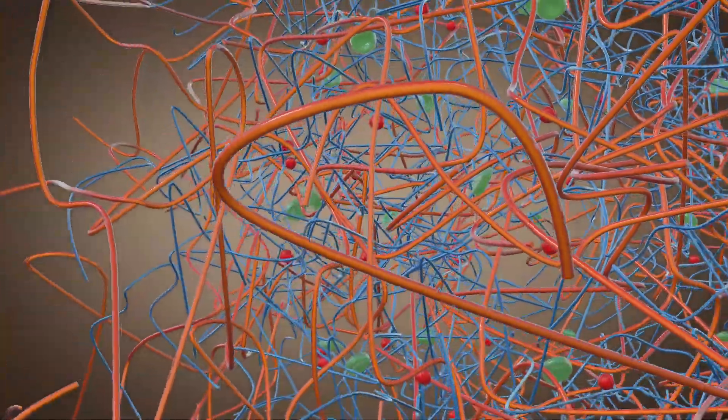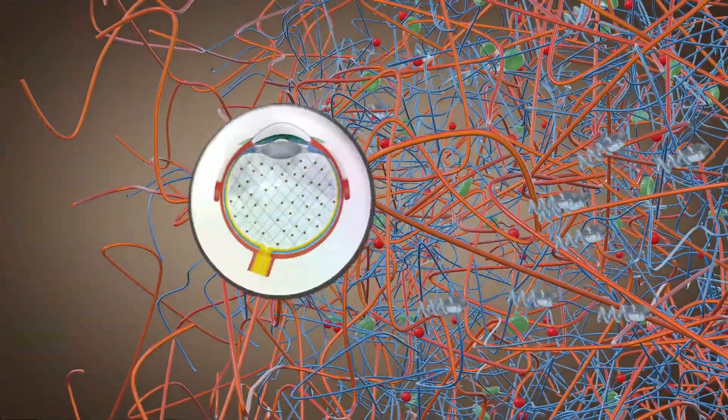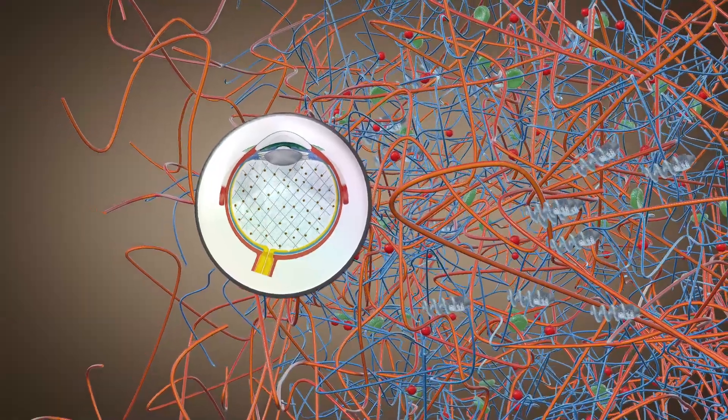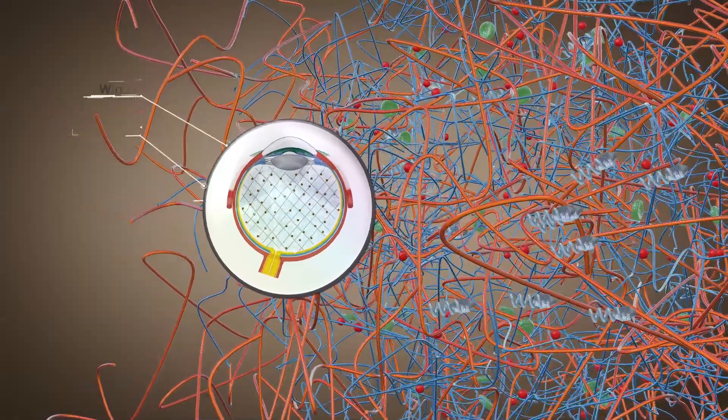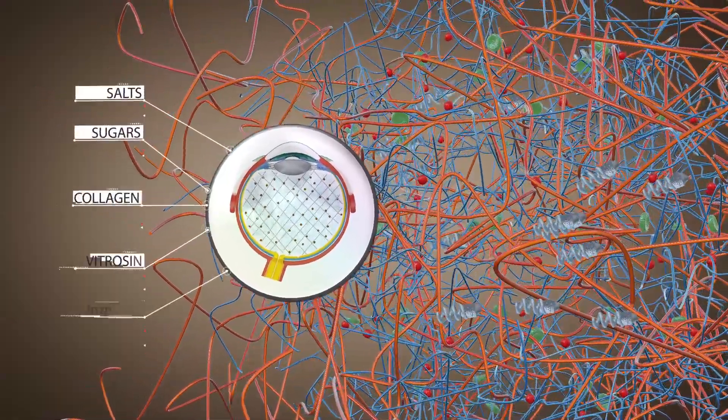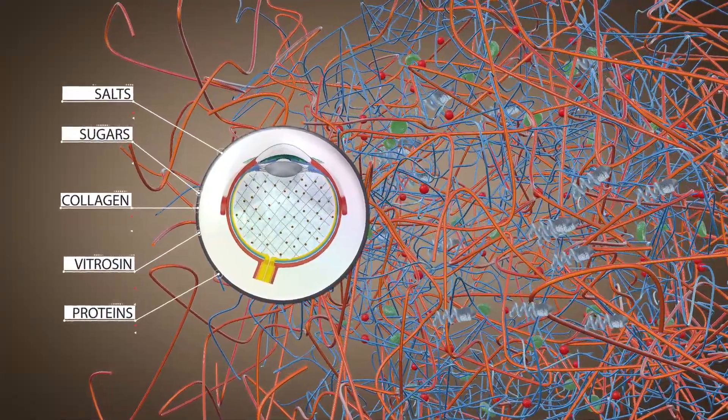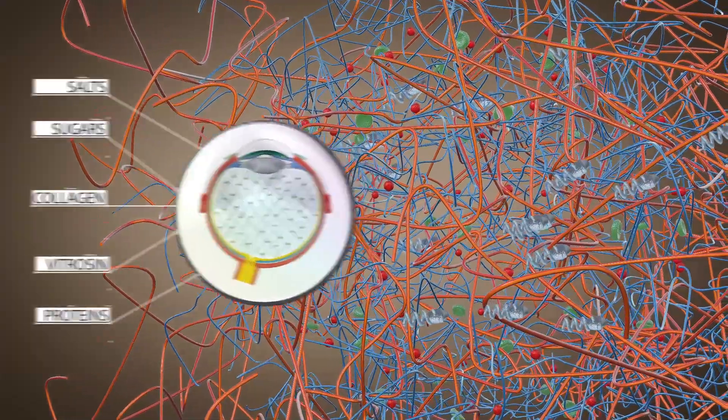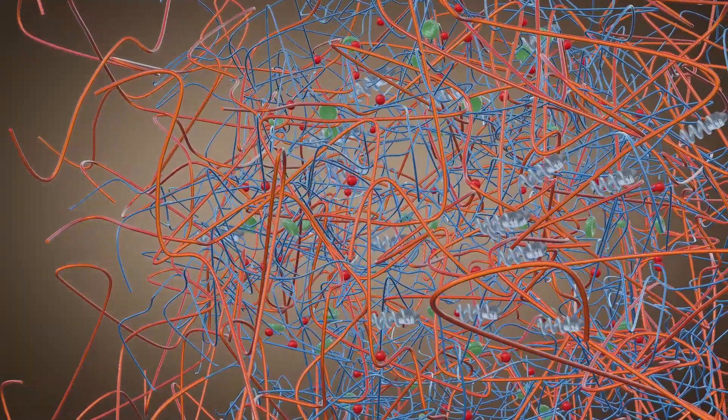However in fresh bovine vitreous, even small helices cannot translate through the fluid. Vitreous humor consists not only of hyaluronic acid, but also contains salts, sugars, collagen, vitrosin and a variety of proteins. It is very inhomogeneous and can adhere strongly to the particles which prevents propulsion.